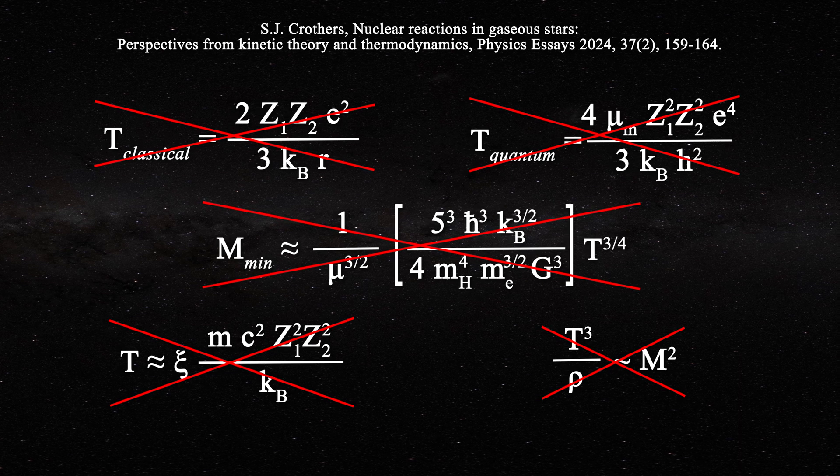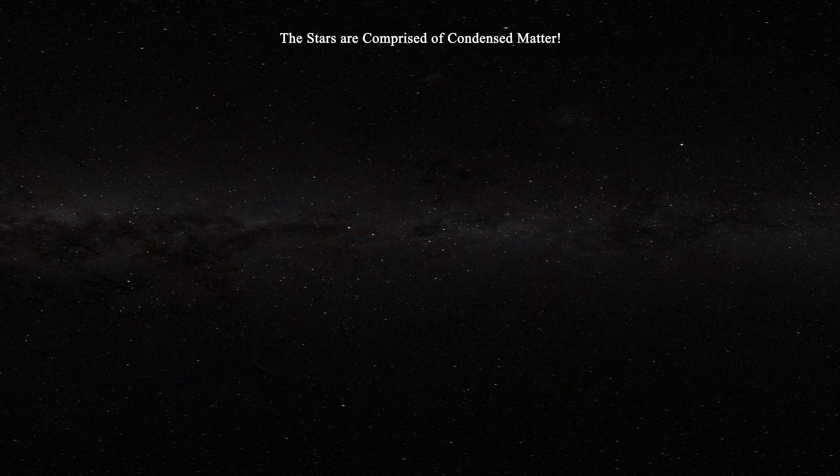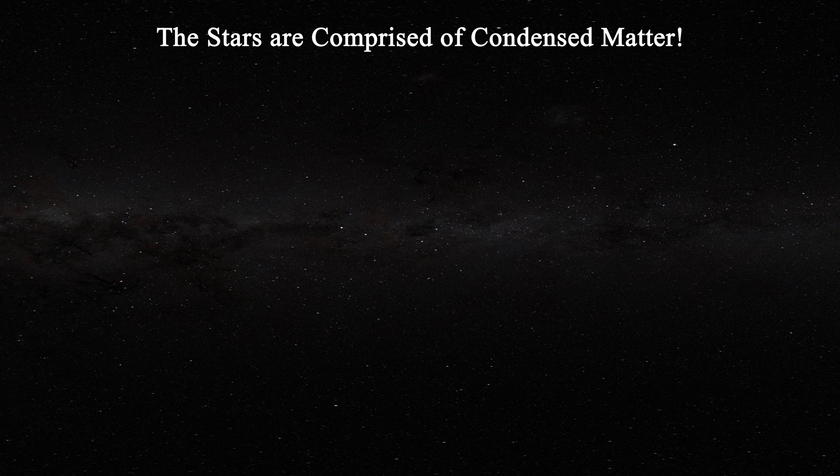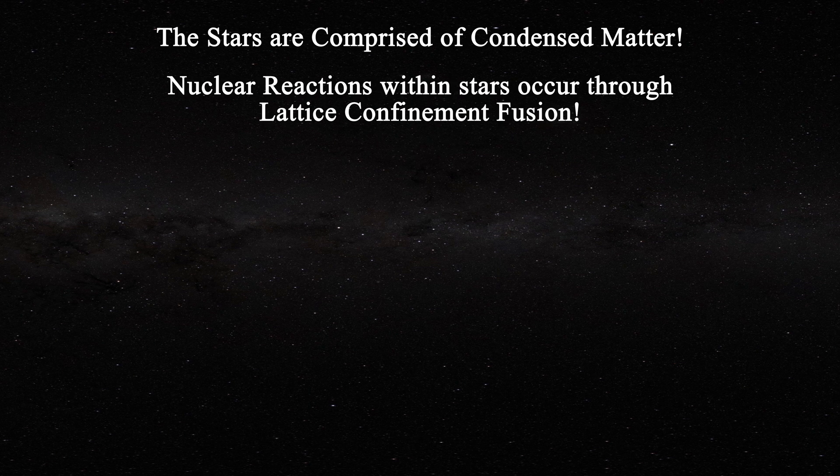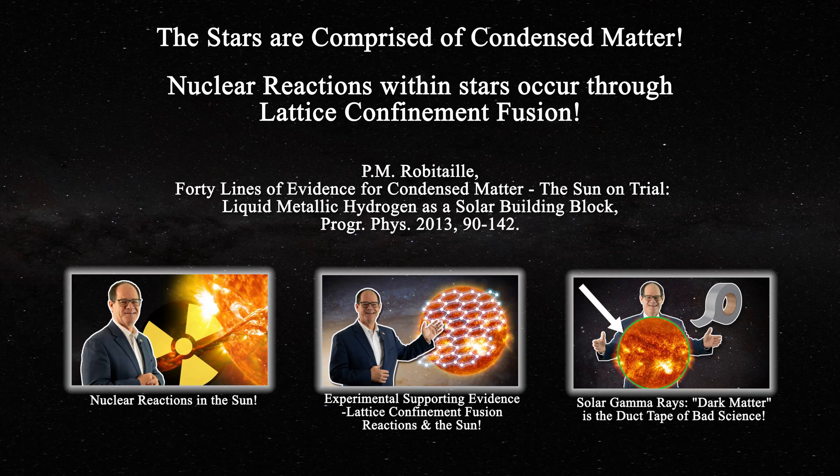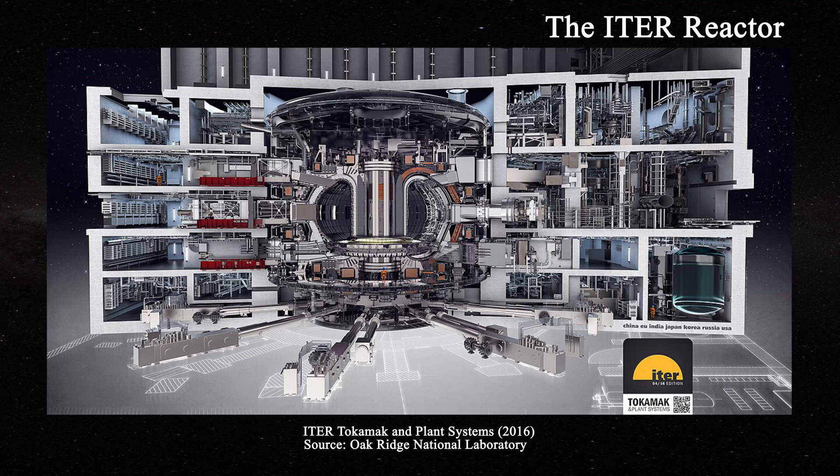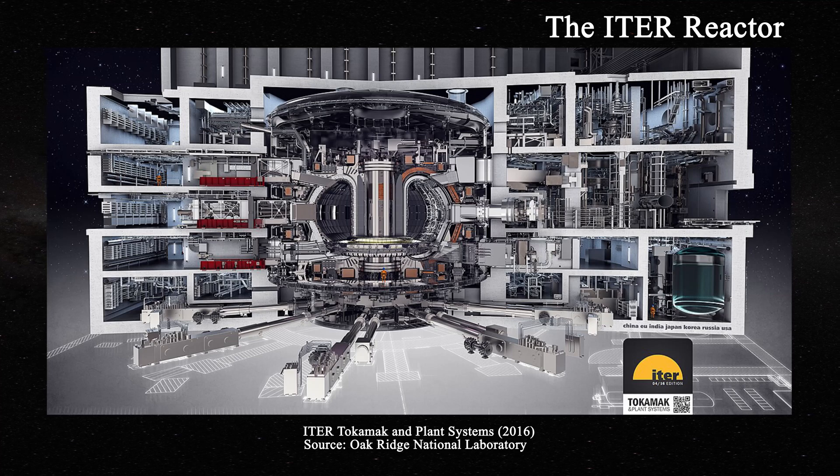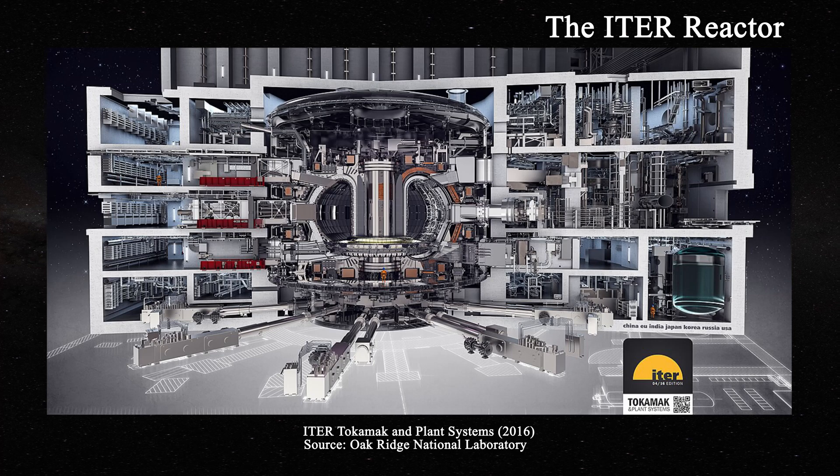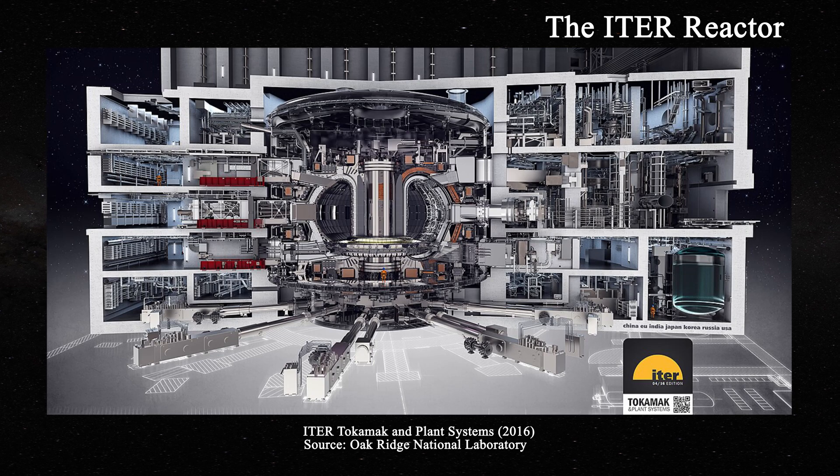The only reasonable solution to this dilemma is to recognize, as I have repeatedly stated, that the stars are comprised of condensed matter, and nuclear reactions within stars must take advantage of lattice confinement fusion, as I first advanced in this paper and discussed in these videos. As for the ITER facility, it will be unable to produce any usable energy, as it is strictly designed for research and unable to pump even a single electron into the electrical grid. It is also extremely doubtful that any of its offshoots will ever be successful.